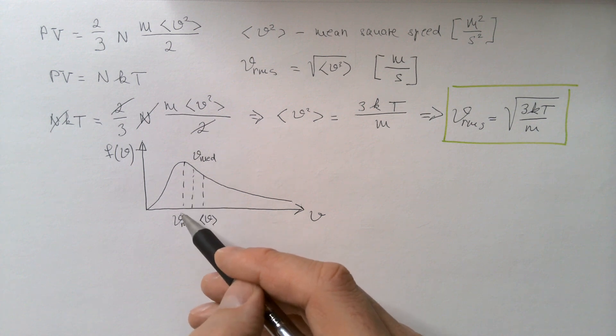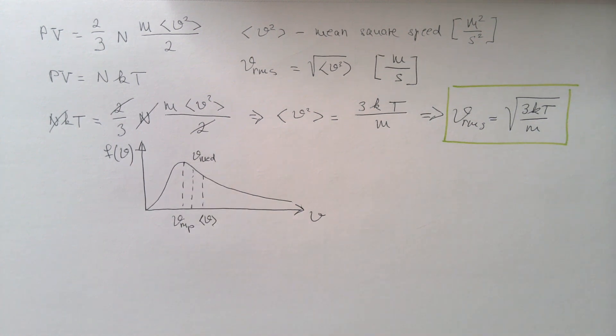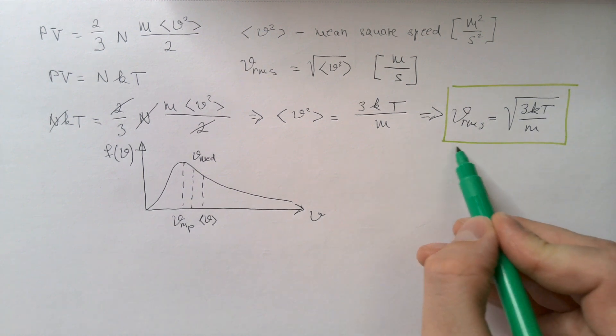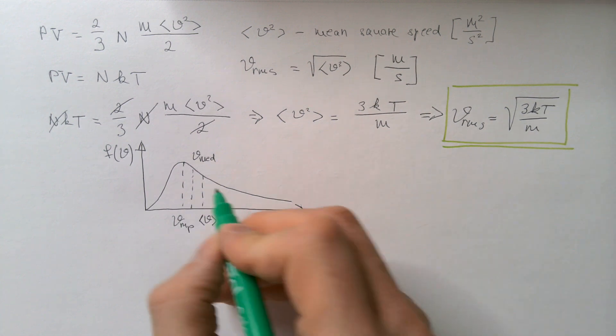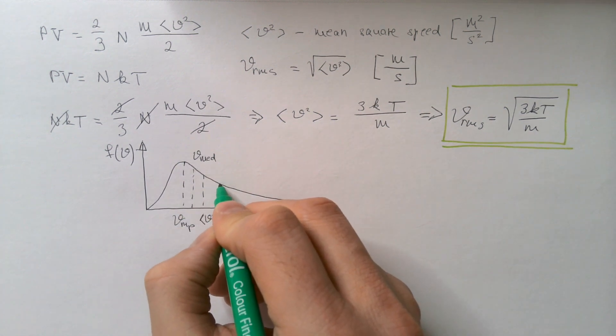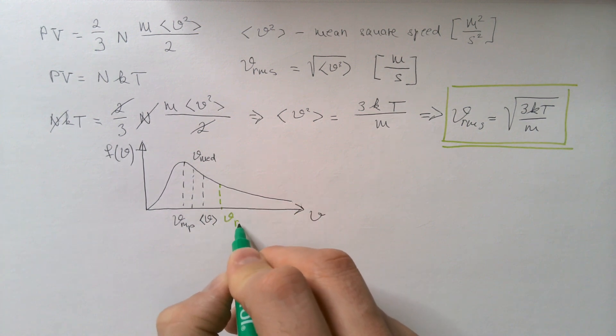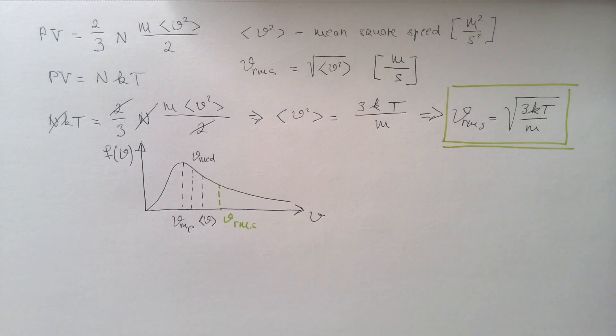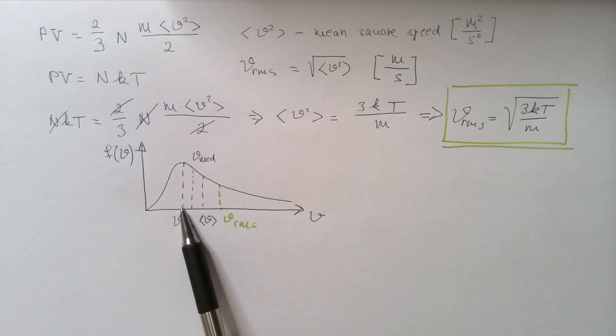50% of atoms have speeds less than median, and 50% have speeds larger than median speed. Today, we derive this last characteristic speed in kinetic theory of gases, and on this curve, V RMS sits perhaps somewhere here. V RMS is larger than mean speed, which in turn is larger than median speed, which in turn is larger than most probable speed.